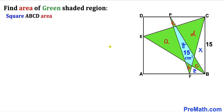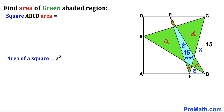Let's calculate the area of square ABCD. Recalling the area formula: Area = s², where s is the side length. In our case the side length is 15 centimeters, so the area of square ABCD is 15² = 225 centimeters square.